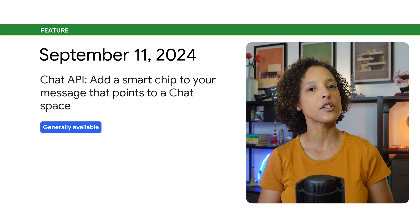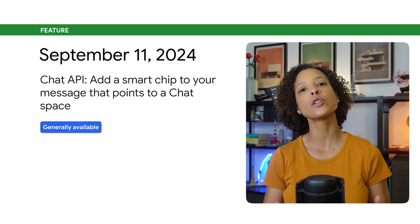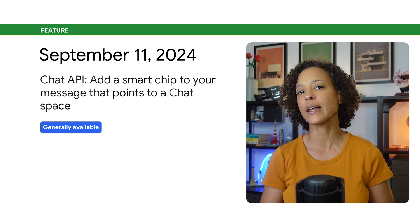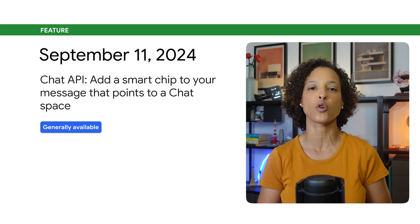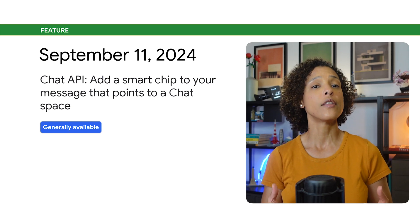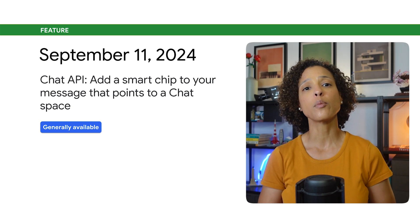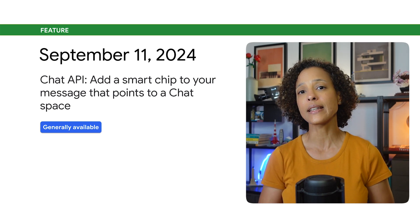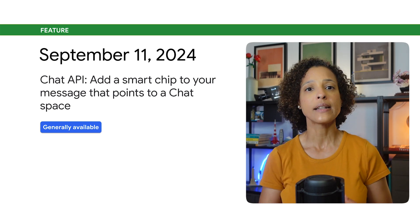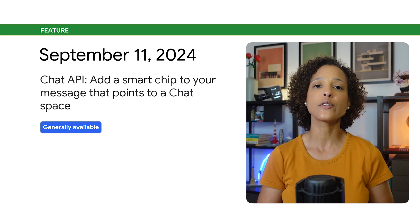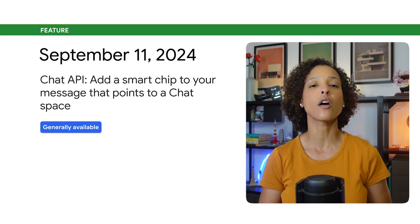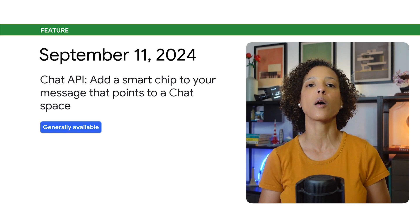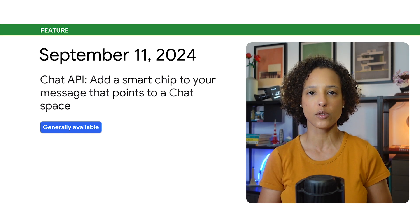You can now add a smart chip to your message that points to a chat space in any field that supports formatted text. This feature is available through the chat space link data object that has been added to the rich link metadata field of the spaces.messages resource.